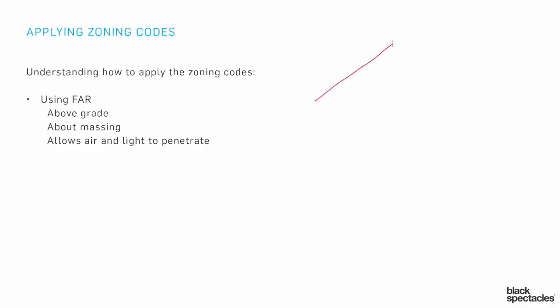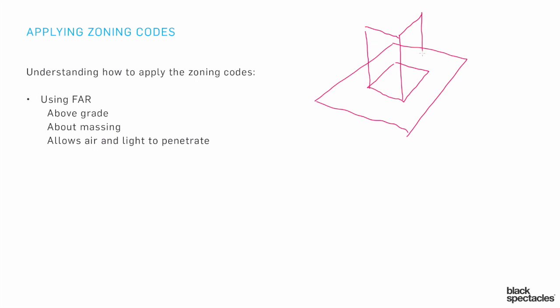FAR is the way of relating a site area to a building. If we have a site and we're going to build a building on it, we can relate the number of square feet of floor we have through the whole building to the area of the site. We put that as a ratio, and if the zoning department says you have a floor area ratio of two, that means you can build two times the site area of buildable enclosed interior area.